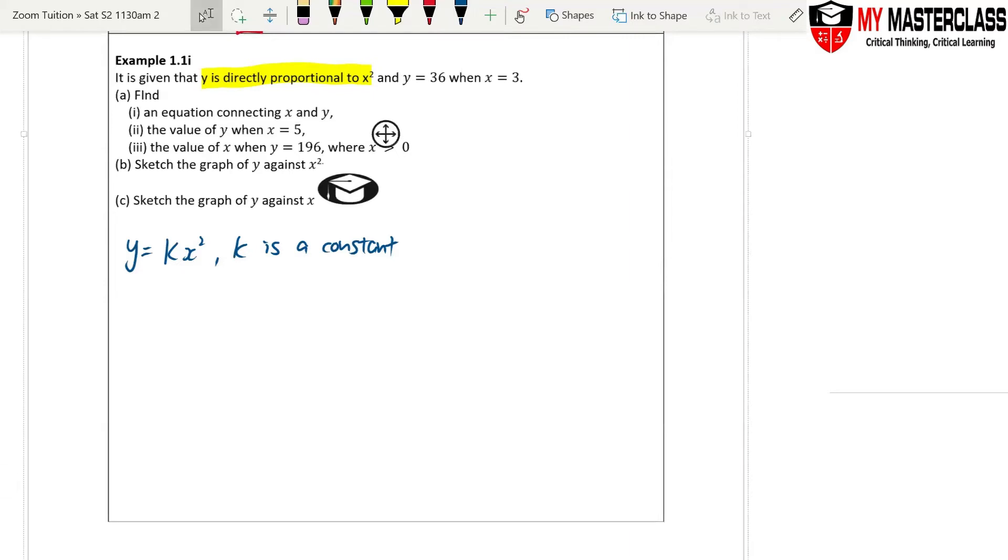First, they tell you that y equals 36 and this one equals 3. What do you think they tell you this for? So that you can find what? Find k. Always to find k. 36 equals k times 3 square. So k equals 36 divided by 9, which equals 4. So therefore, this is your k part 1.